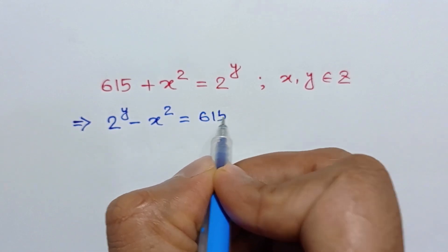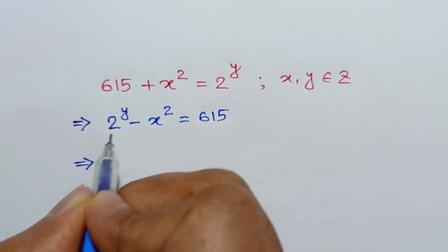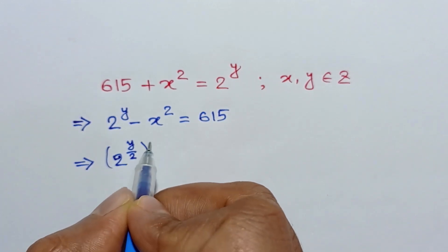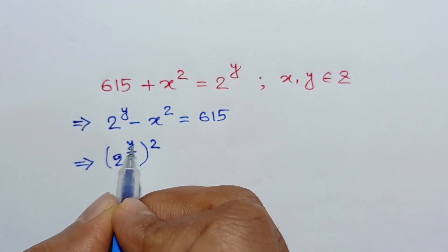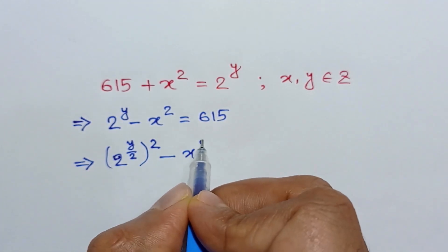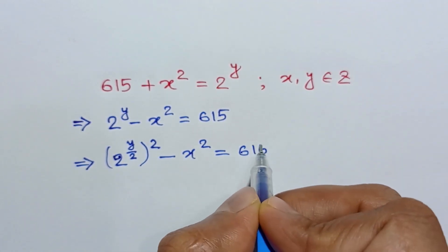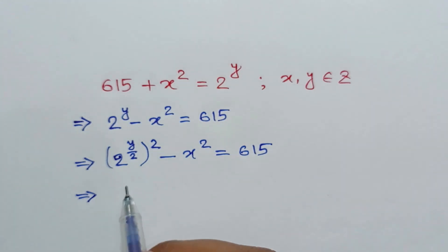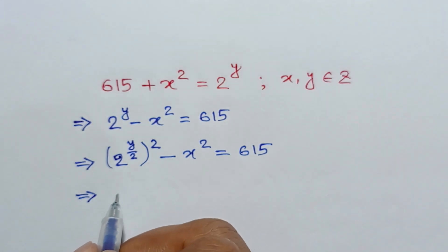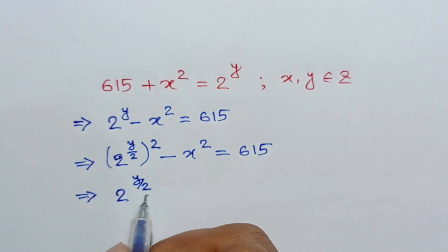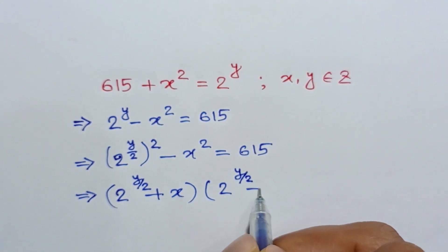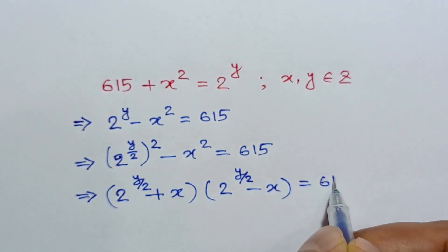2 to the power y can be written as 2 to the power (y/2) whole squared. This gives us (2^(y/2))² minus x² is equal to 615. Using the difference of squares formula a² minus b² equals (a+b)(a-b), we can write: (2^(y/2) + x) times (2^(y/2) - x) is equal to 615.